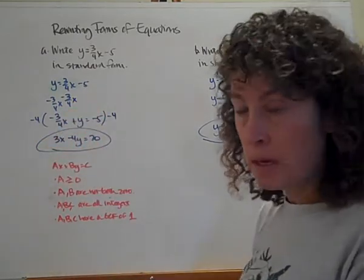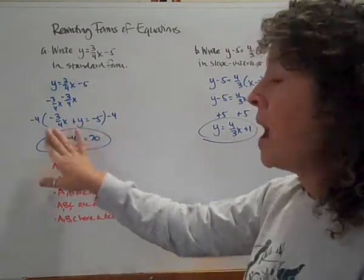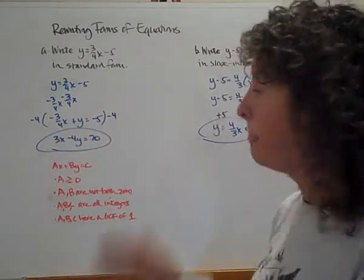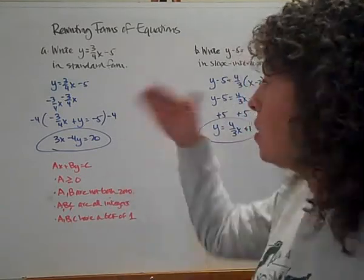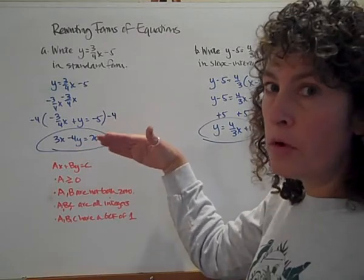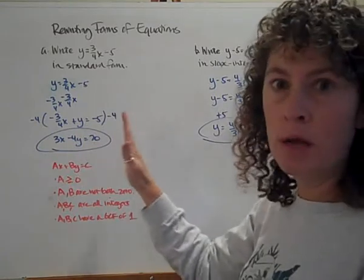It's also okay if b is zero. So if b is zero, you'll notice that we'll have an equation where x is equal to a number. If an equation where y is equal to a number and we don't have an x-value variable in there is a horizontal line, hopefully you've already jumped to the conclusion that an equation that has x equals just a number is our vertical line.